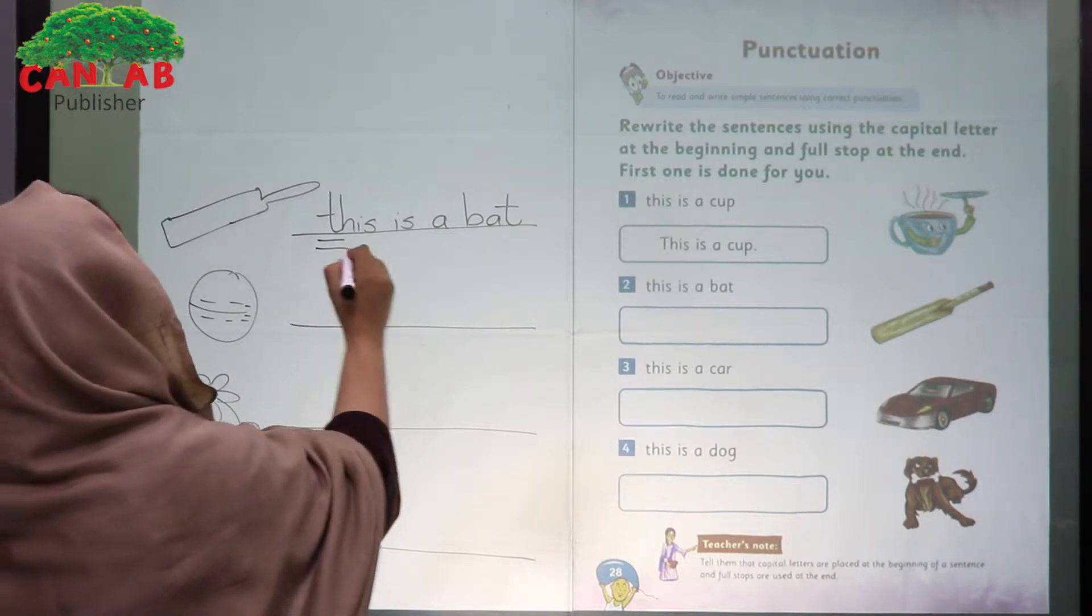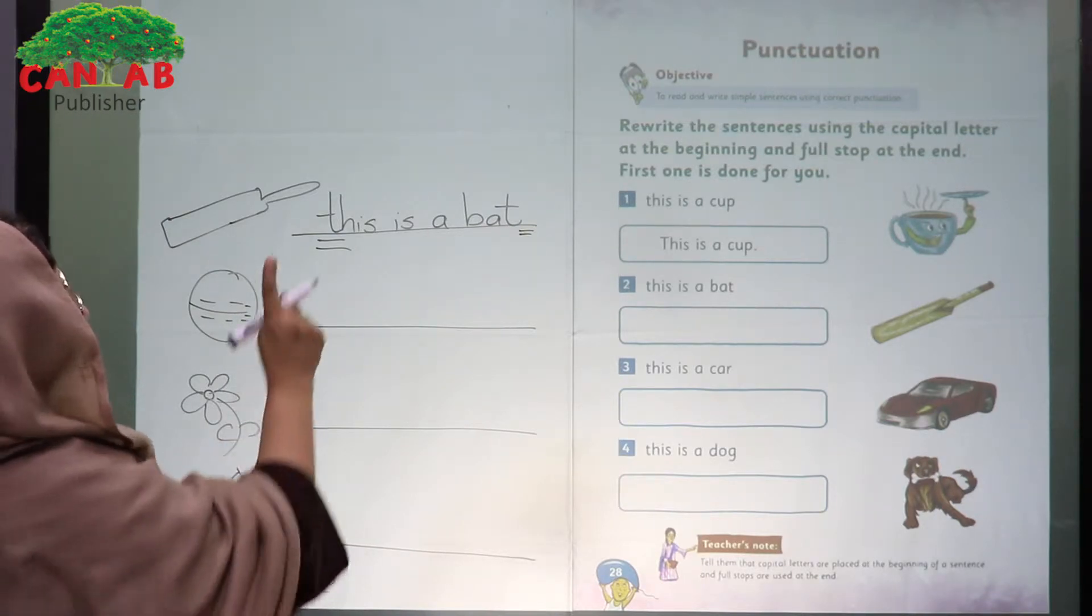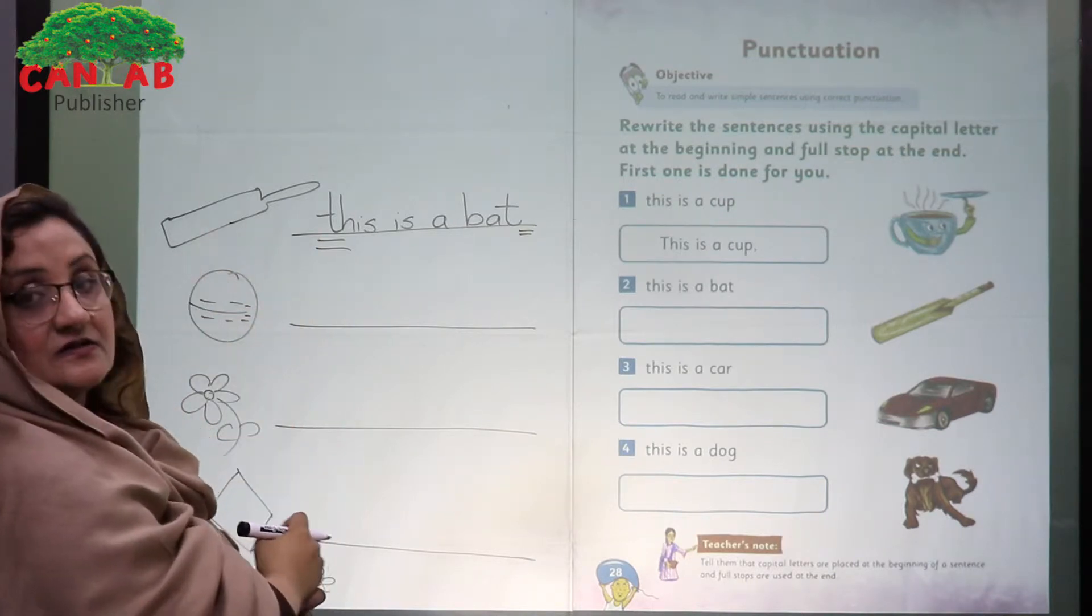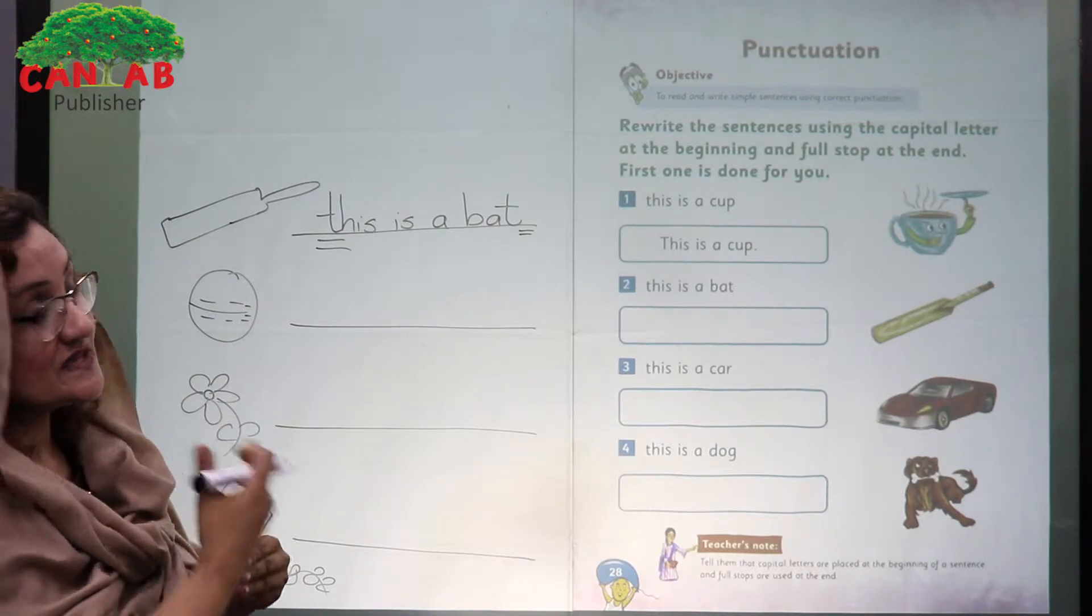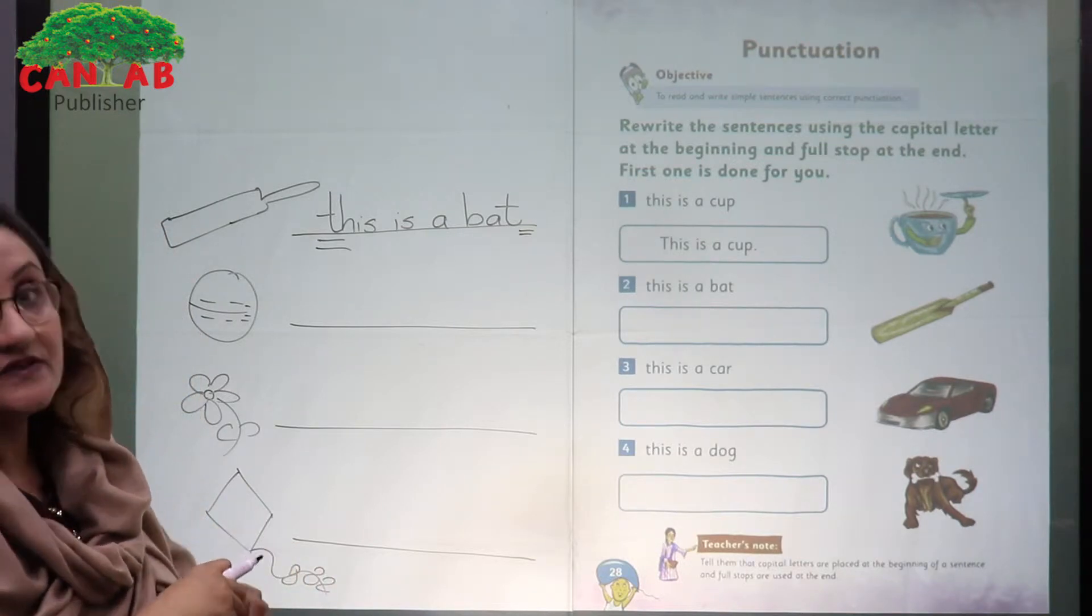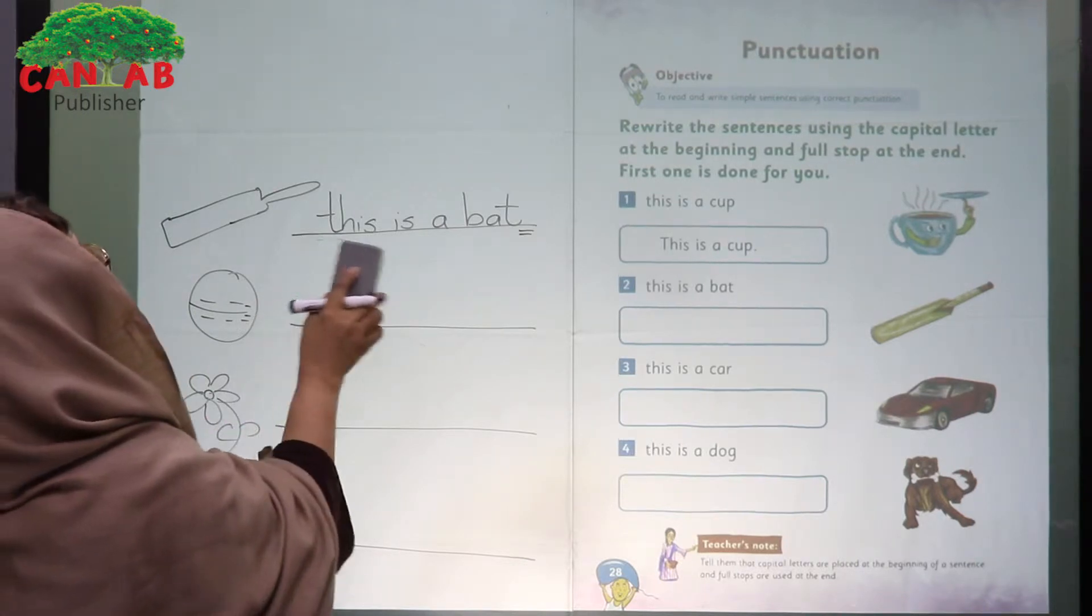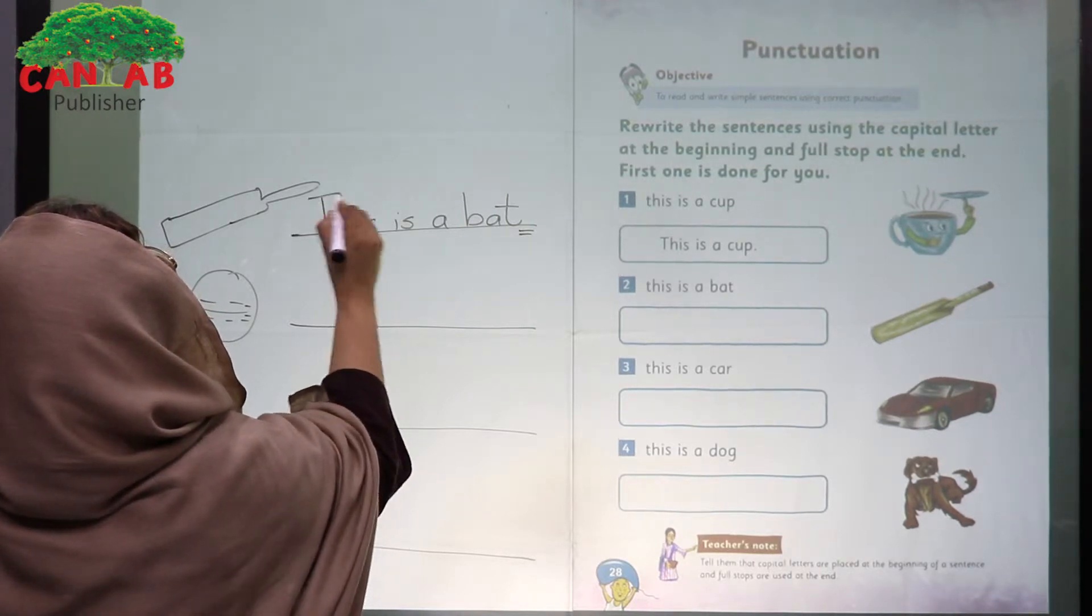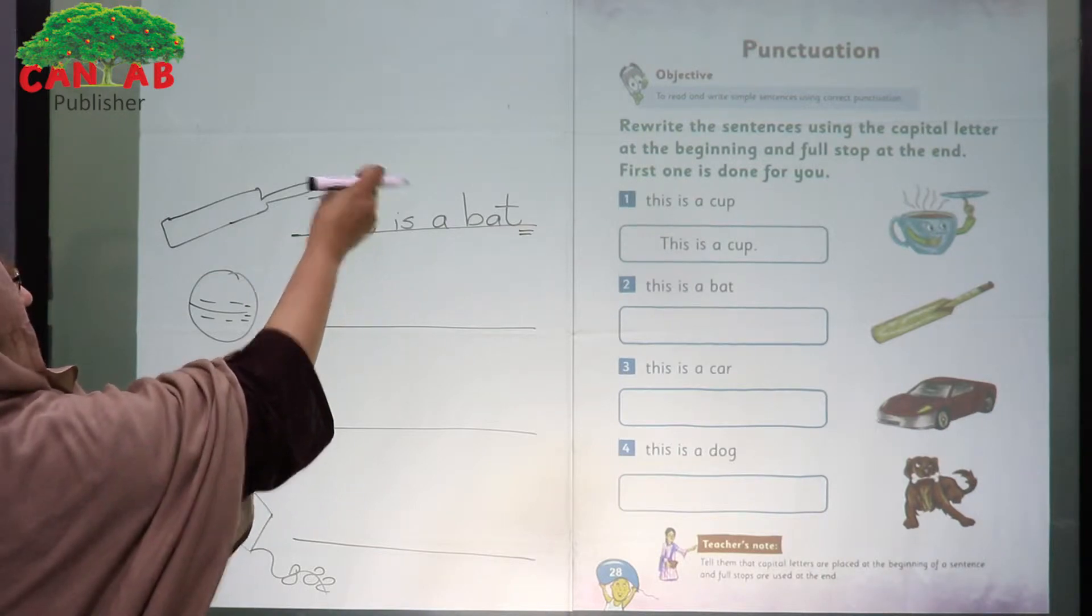Look at here and here. What I have done? Instead of the capital letter, I have used the small letter. Whenever we start a sentence, it should be started with a capital letter. So I am going to correct this sentence and use the capital letter in the beginning.